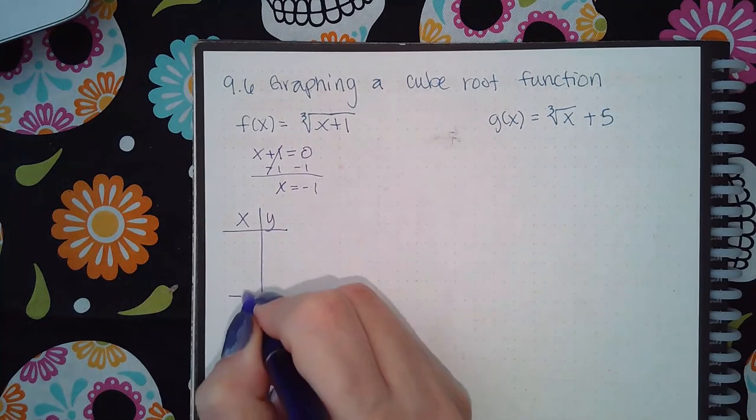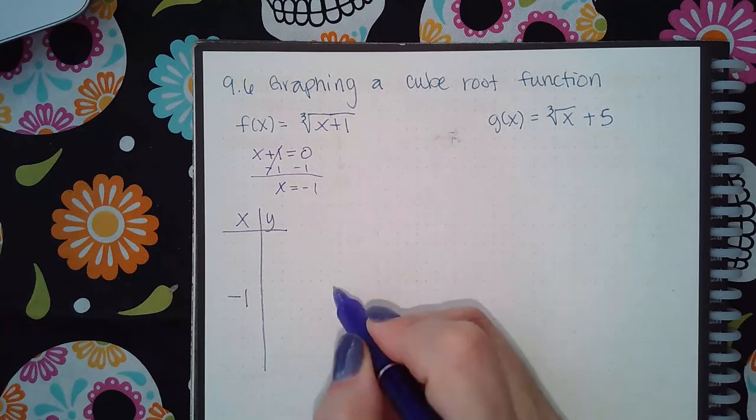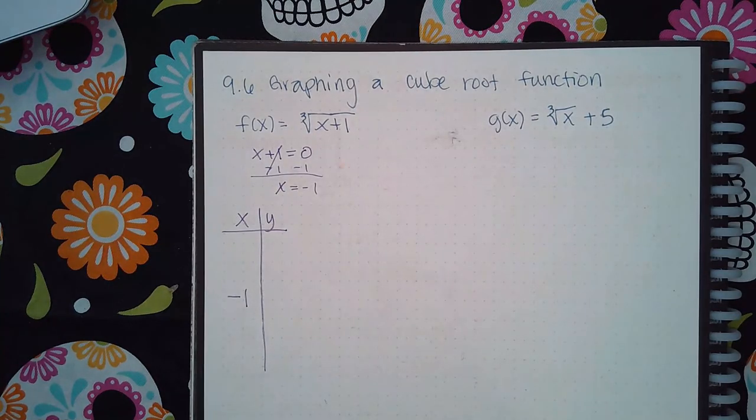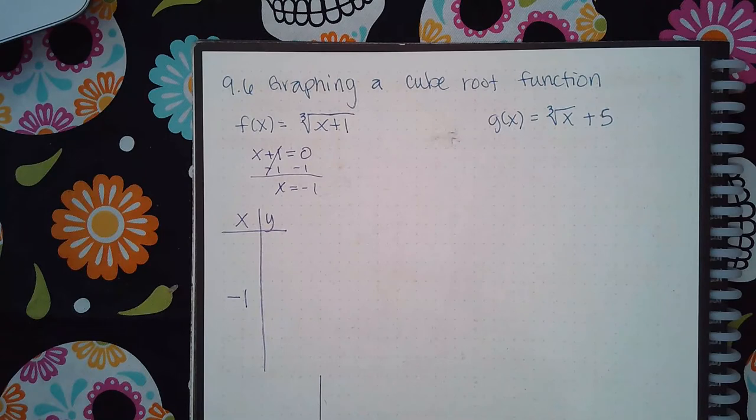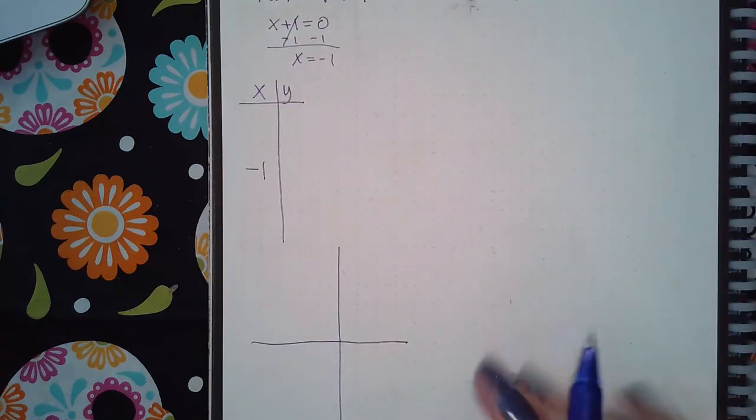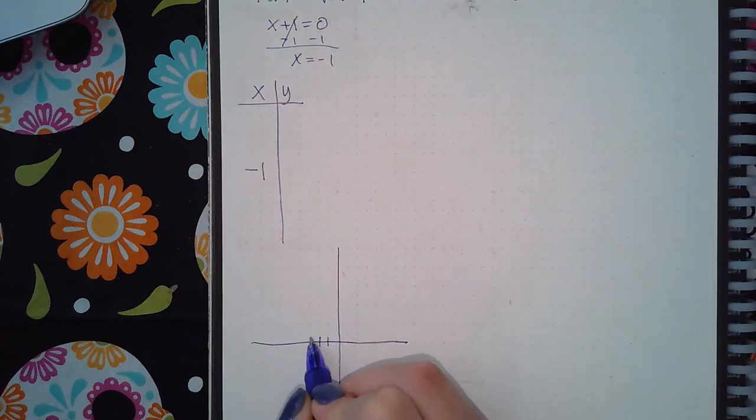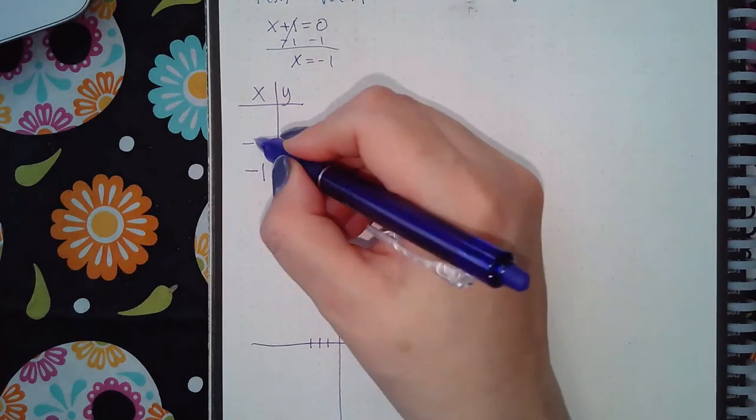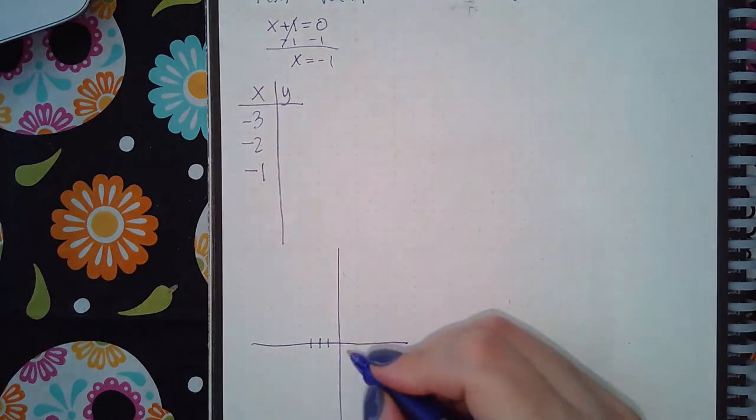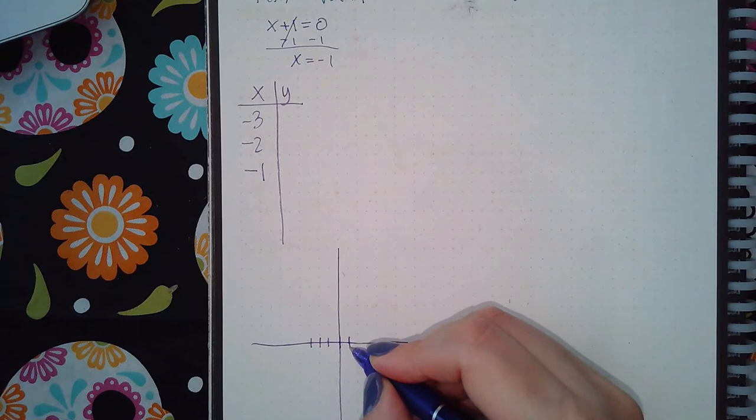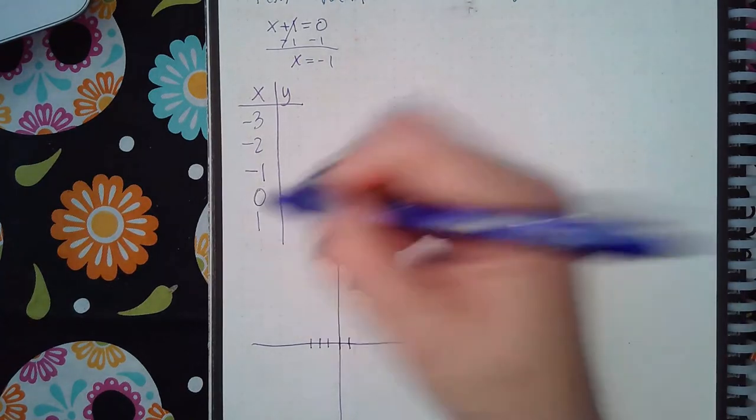So I'm going to use negative 1 here, and then on the number line, here's negative 1. I'm going to use two numbers to the left of negative 1, like negative 2 and negative 3, and then two numbers to the right of negative 1, like 0 and positive 1.